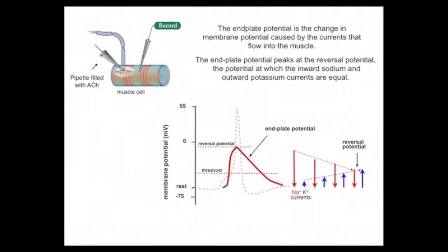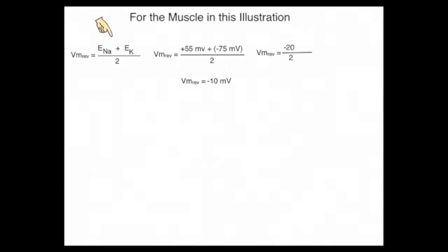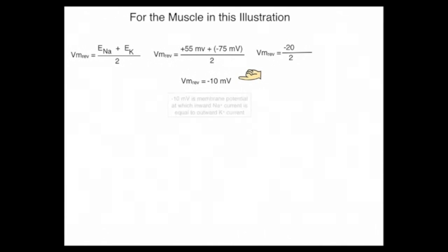The cell never actually reaches the reversal potential because the membrane potential crosses the firing threshold well before the reversal potential is reached. That is the point of excitatory synaptic potentials — they attempt to drive the membrane potential well above threshold, thereby ensuring an action potential is evoked. The reversal potential can easily be calculated: since the receptor is equally permeable to sodium and potassium, the reversal potential is simply the sum of the sodium and potassium equilibrium potentials divided by two — the midpoint between the two equilibrium potentials. Adding plus 55 millivolts and minus 75 millivolts gives minus 20, divided by two yields a reversal potential of minus 10 millivolts.